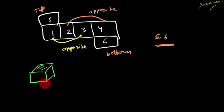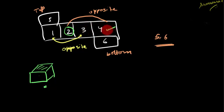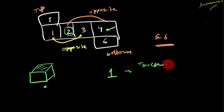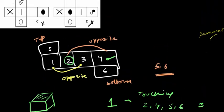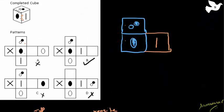In a cube, each face touches all other faces except the one opposite to it. So if face 2 is asked, it touches 1, 3, 5, and 6 — it does not touch 4 because 4 is opposite. Similarly, face 1 touches 2, 4, 5, and 6 — it does not touch 3. I will use this technique in the third part of cube reasoning, but I wanted to mention it here as well.